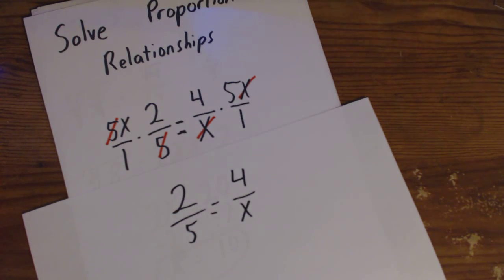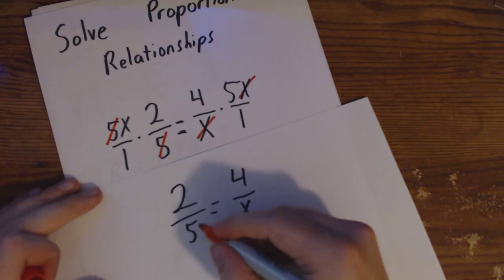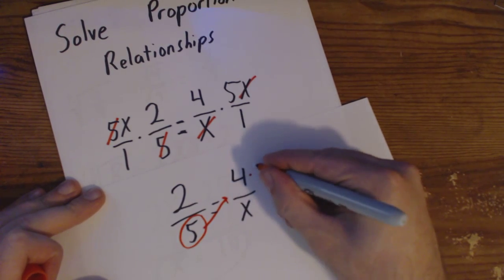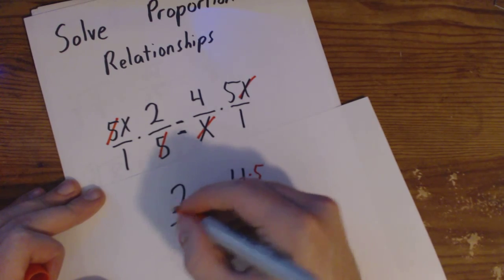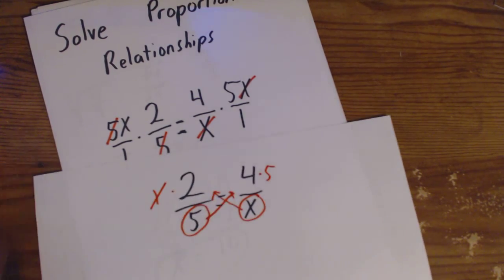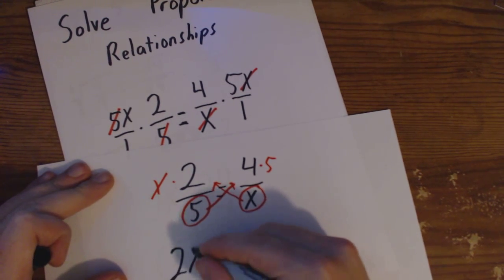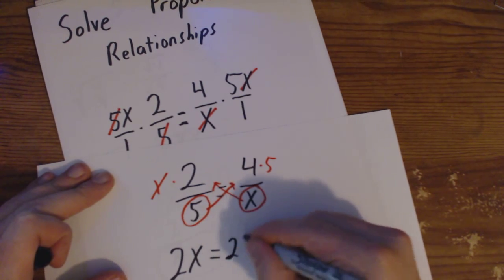Now what we can do, this is a shortcut for what we did on this one, is we can simply take this 5, bring it up here, and take 4 times 5, take this x, bring it up here, 2 times x. And we're going to get rid of the denominators. In this case, all we have over here is 2 times x equals 4 times 5 is 20.